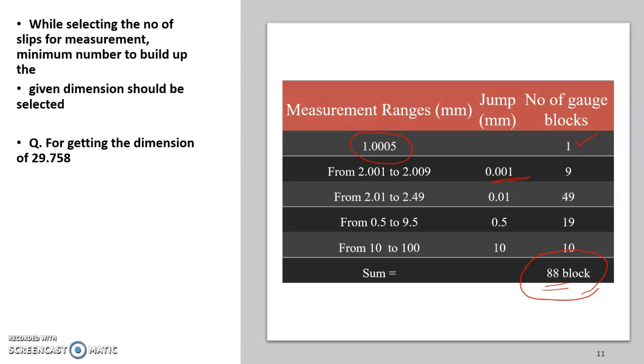It will be written like 2.001 to 2.009 in steps of 0.001 and there will be a total of nine blocks, and so on. The total will be 88 blocks. That is the idea of reading all the blocks in a set.